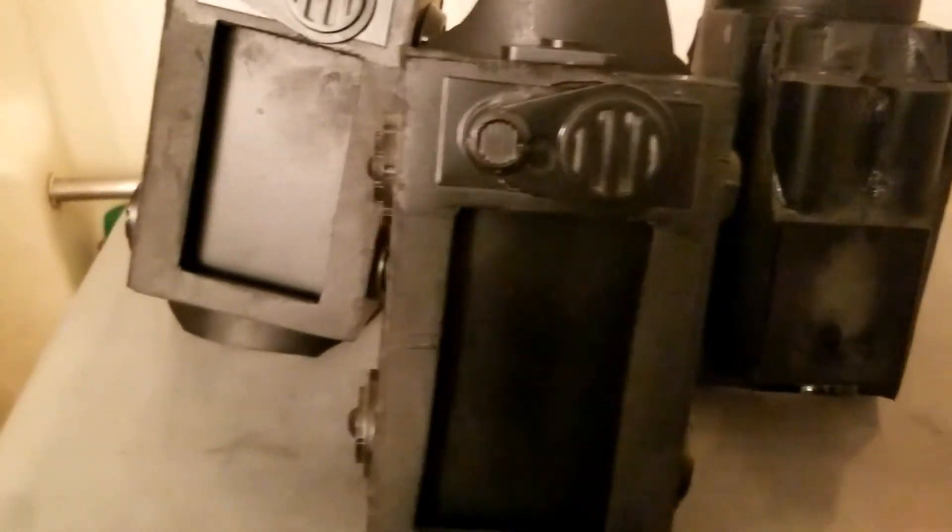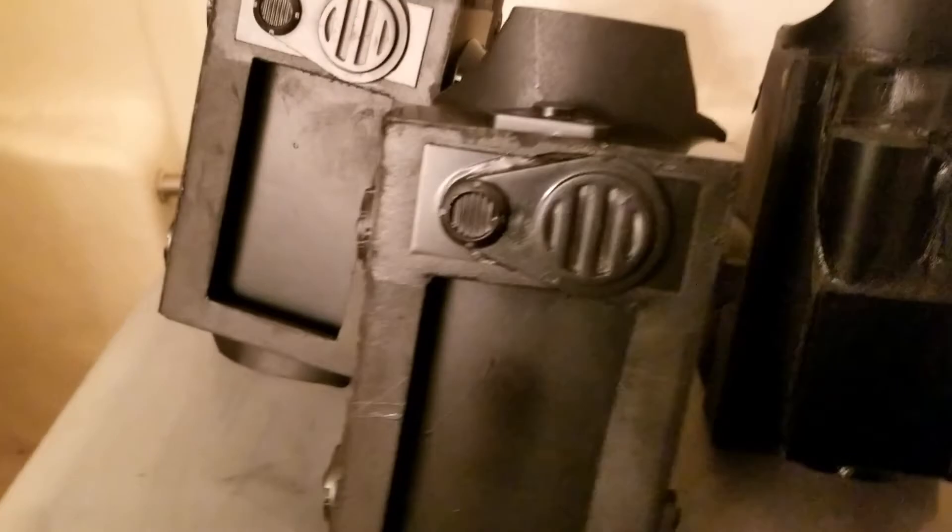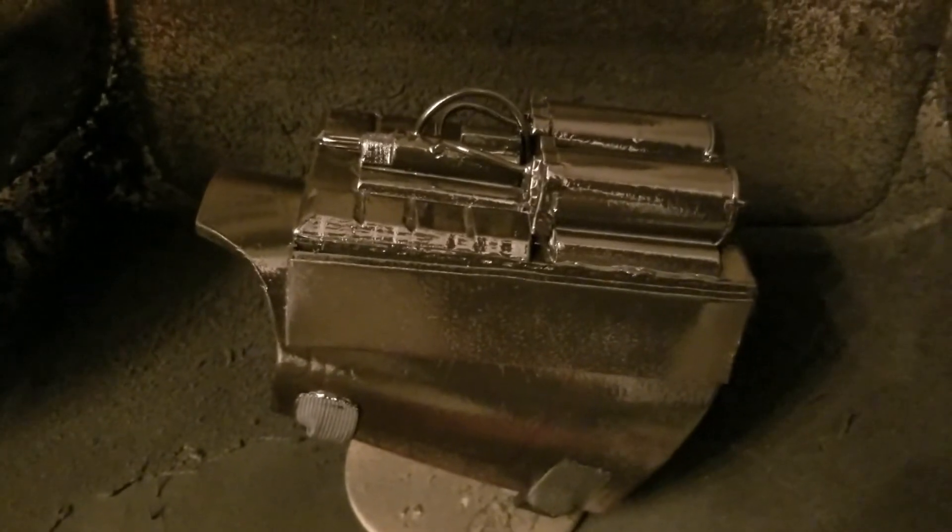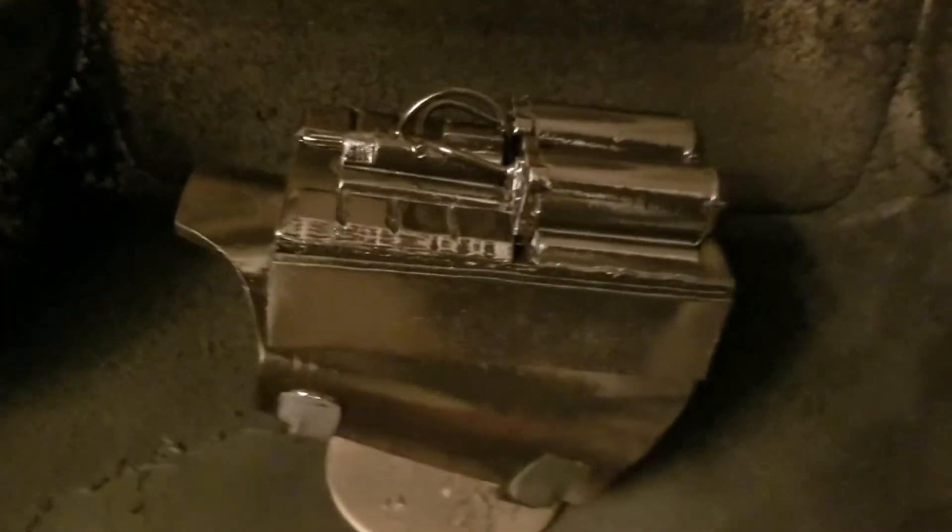We are in what passes for the paint room. As you can see, I've got the coat of Plastidip on all four bracers. Next up will be the metallic coat.